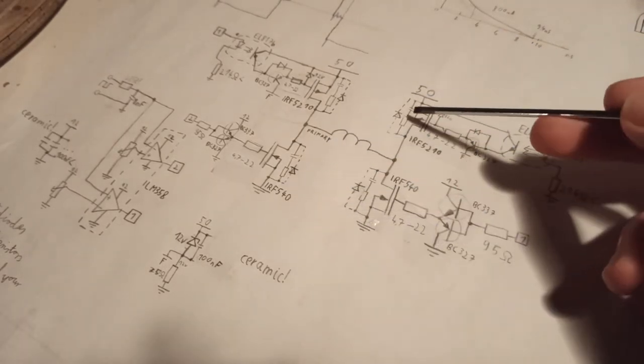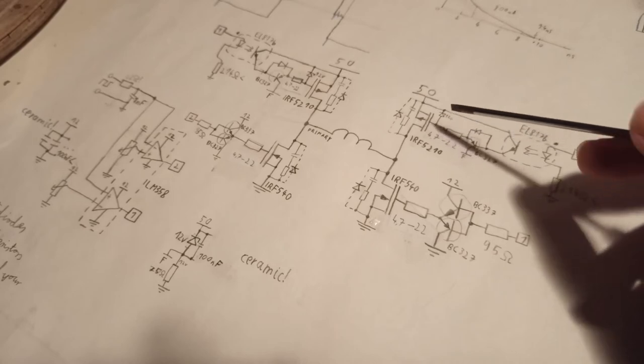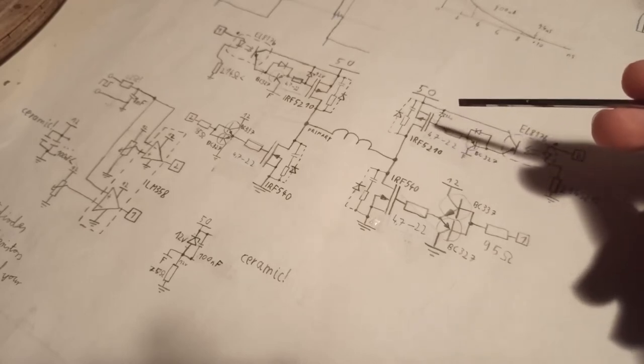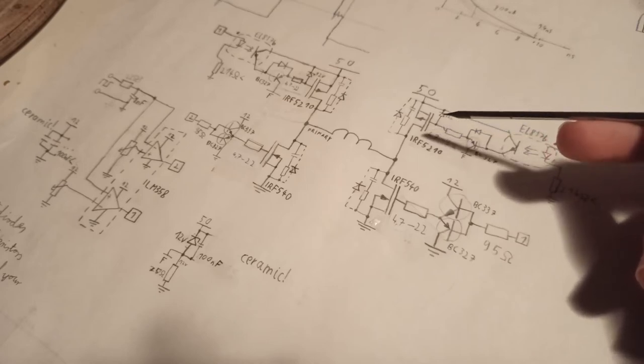These resistors shouldn't be wire wound ones because those have a very high internal inductance, which will increase the overshoots and decrease the speed, which is not good.